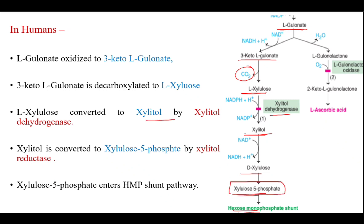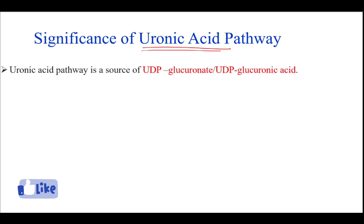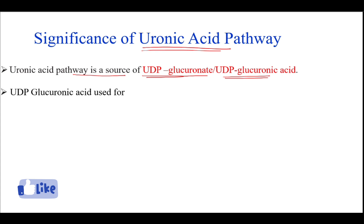This is the minor oxidative pathway of glucose, that is the glucuronic acid pathway. Coming to the significance of this uronic acid pathway: the uronic acid pathway is a source of UDP-glucuronate, or UDP-glucuronic acid.